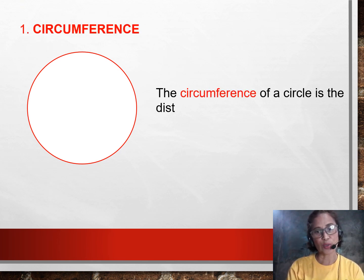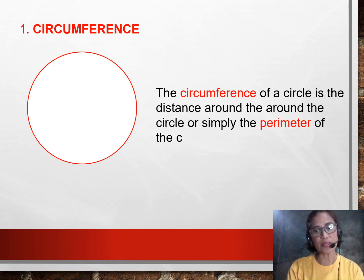Moving on to my lesson, let us first discuss the circumference. So, what is a circumference? The circumference of a circle is the distance around the circle or simply the perimeter of the circle as shown in the figure.